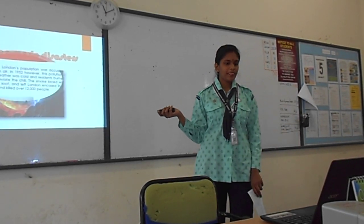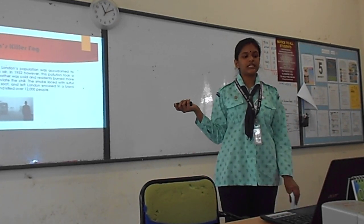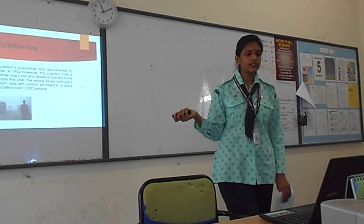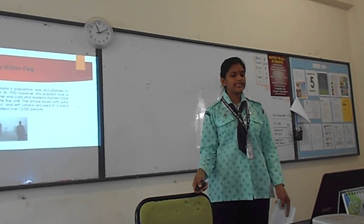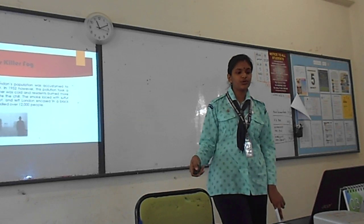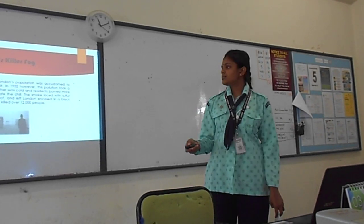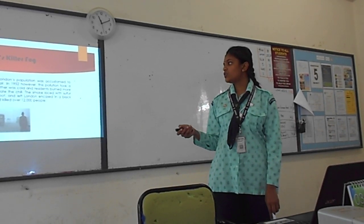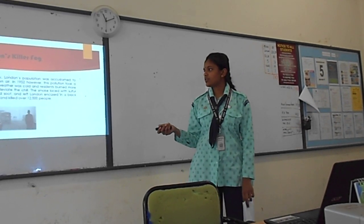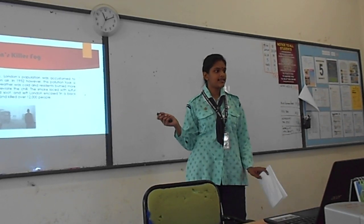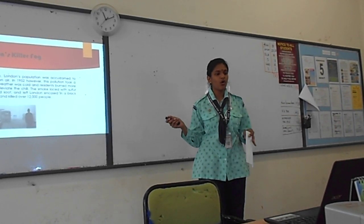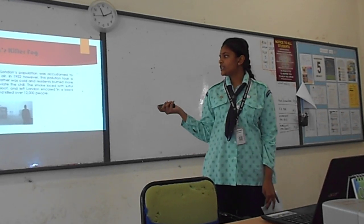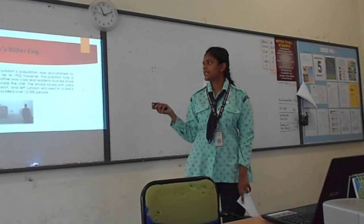Now, moving on to the types of man-made disasters. London's population was accustomed to seeing foggy, pollution-laden air. In 1952, however, this pollution took a serious turn. The weather was cold and residents burned more coal in their fireplaces to keep warm. The smoke mixed with sulphur dioxide, nitrogen oxides, and soot — it was like a haze but more severe. It actually killed over 12,000 people in London.